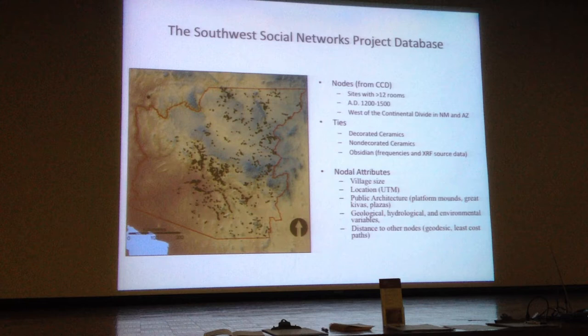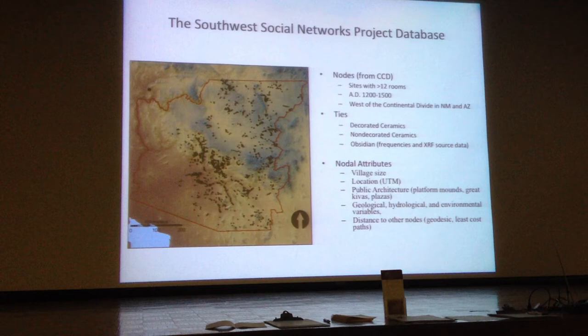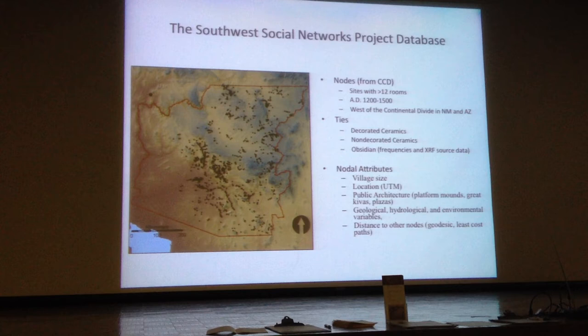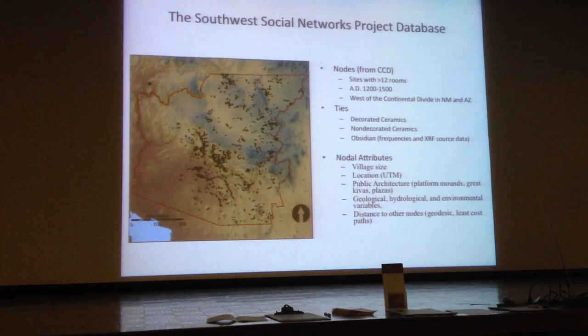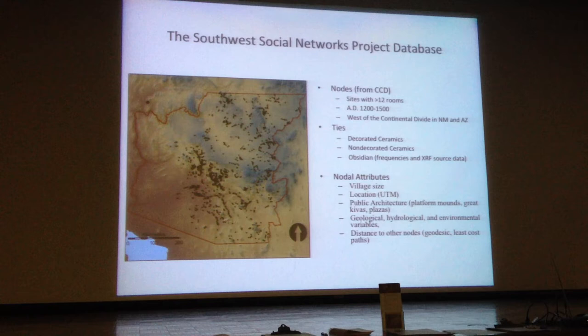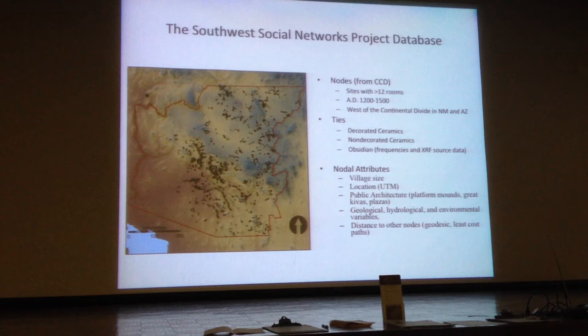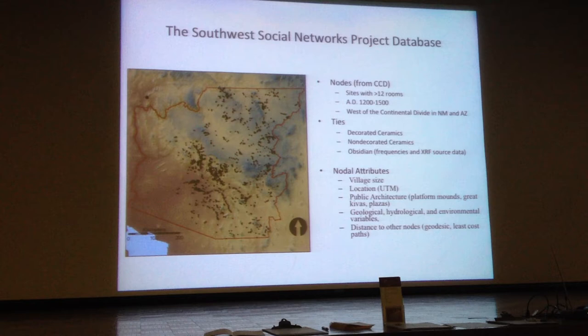For each one of these sites — the notable attributes — we also sought out village size, room numbers, UTM location in a geospatial database, public architecture such as whether there were great kivas, platform mounds, or plazas, plus a couple of environmental variables: what drainage they were in and distance to other nodes, measurable in terms of straight-line distance as well as least-cost paths — how far it would actually be to walk the distance.